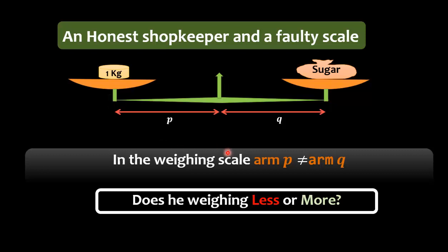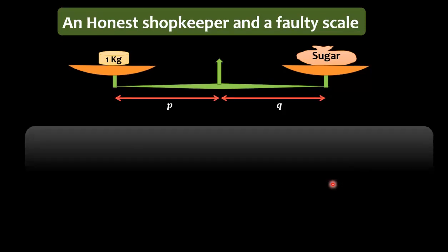So what he does to give the correct measure to his customers: he balances half the weight on the left part of the pan and another half the weight on the right part of the pan.